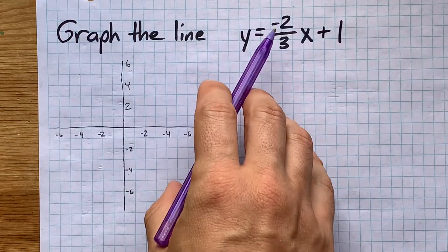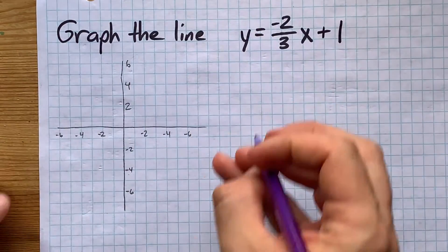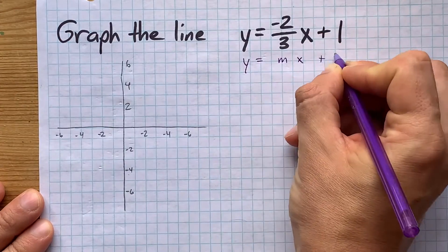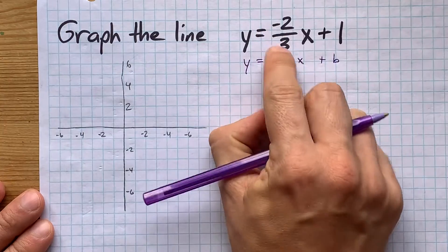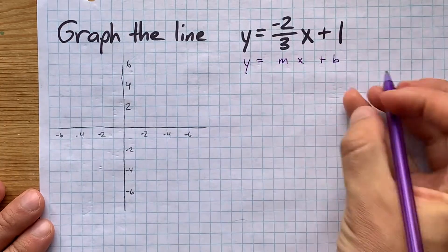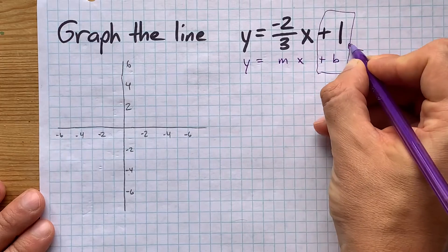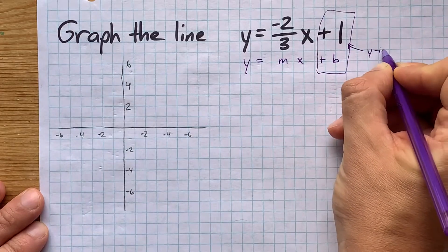Let's graph the line y equals negative two-thirds x plus one. Now this is written in slope-intercept form, that's y equals mx plus b. What that means is that you can read the slope and y-intercept directly from the equation.